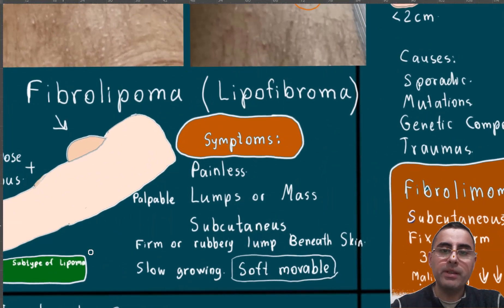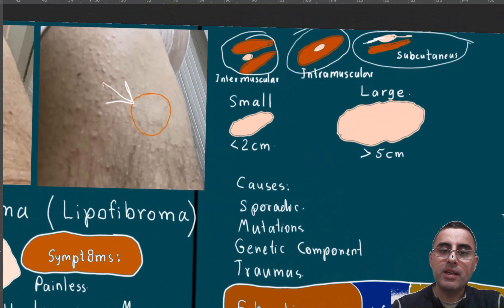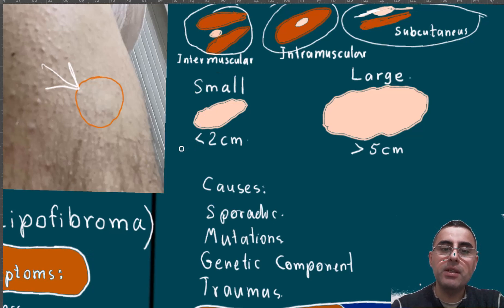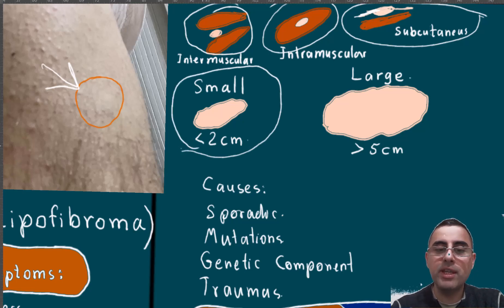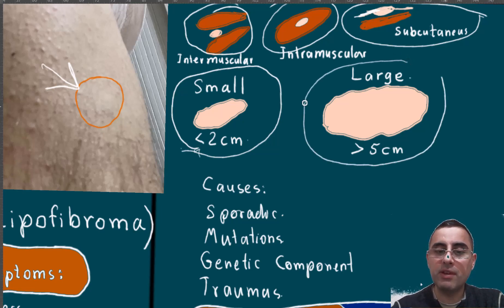Regarding size classification: if a fibrolipoma or lipofibroma is less than two centimeters it is considered small, and most cases are like this. It is considered large when it is more than five centimeters.